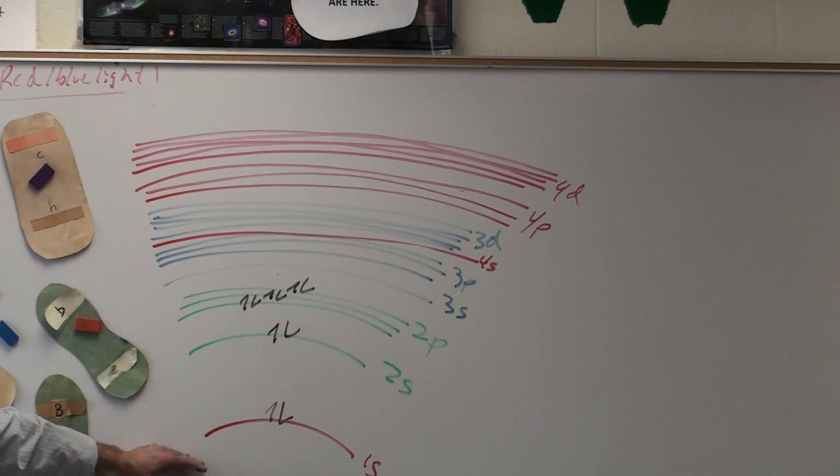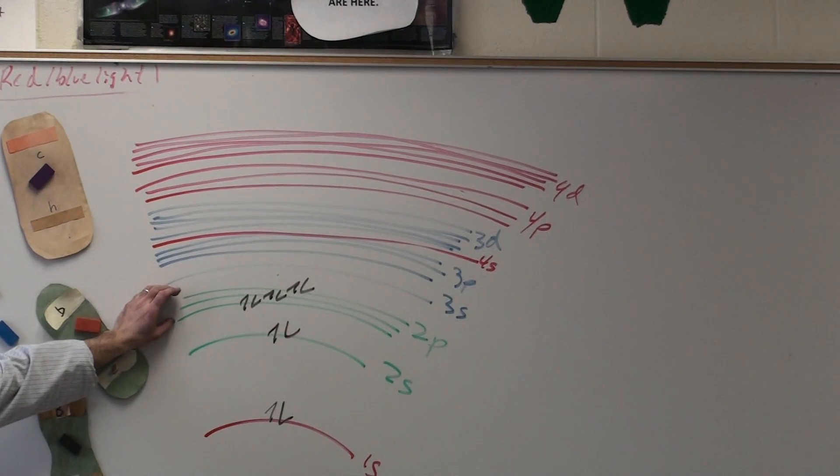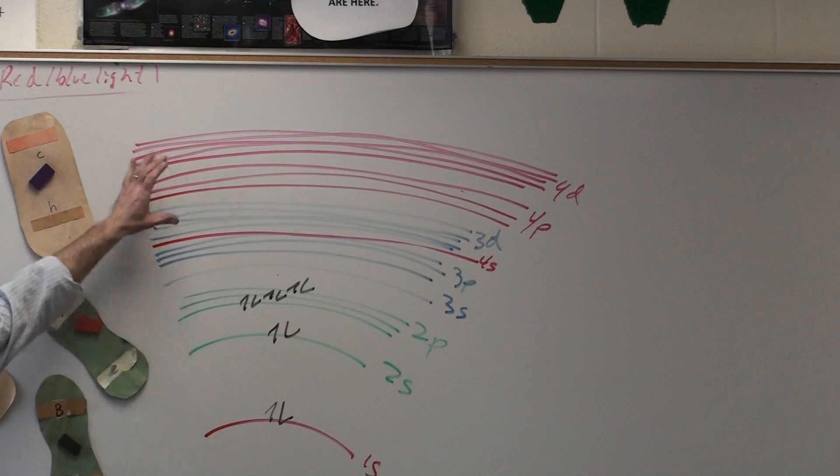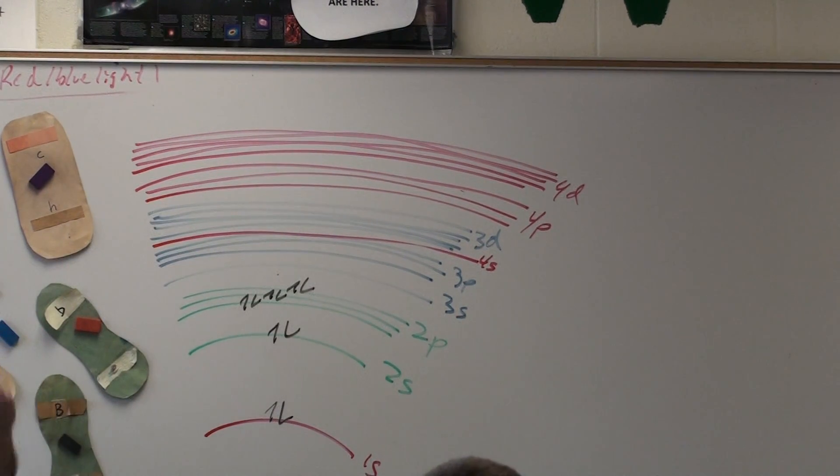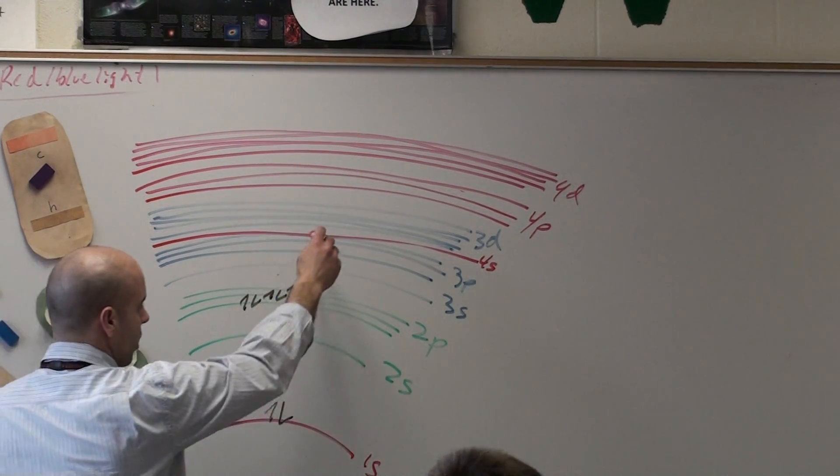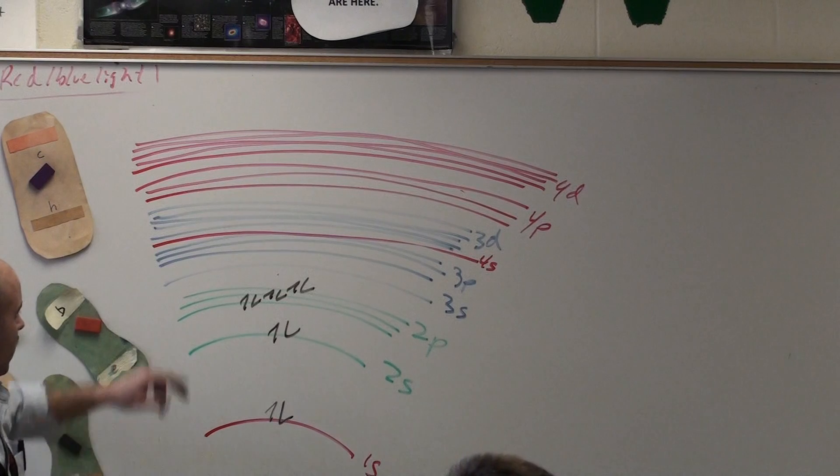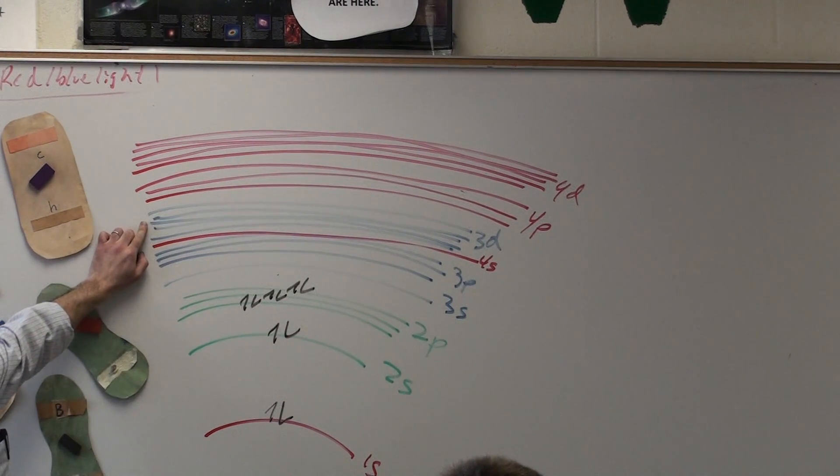Close to the nucleus, everything is spaced out nice and neat. As you get further up, the orbitals get really closely together. And it doesn't become quite as neat. You always go with the lowest available orbital. That's why the 4s is filled before the 3d.